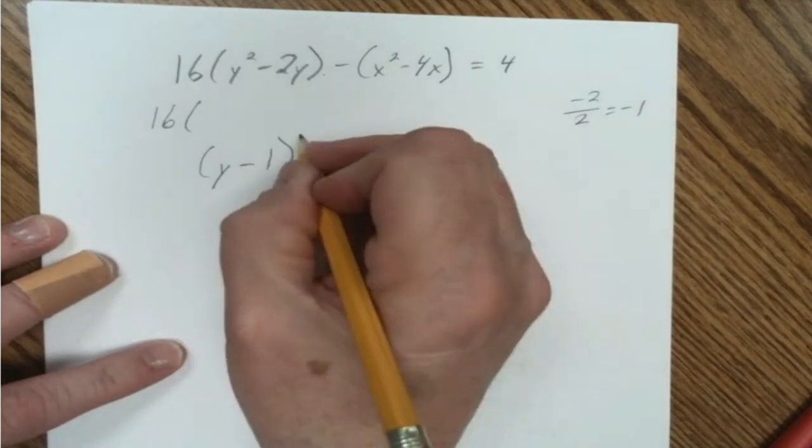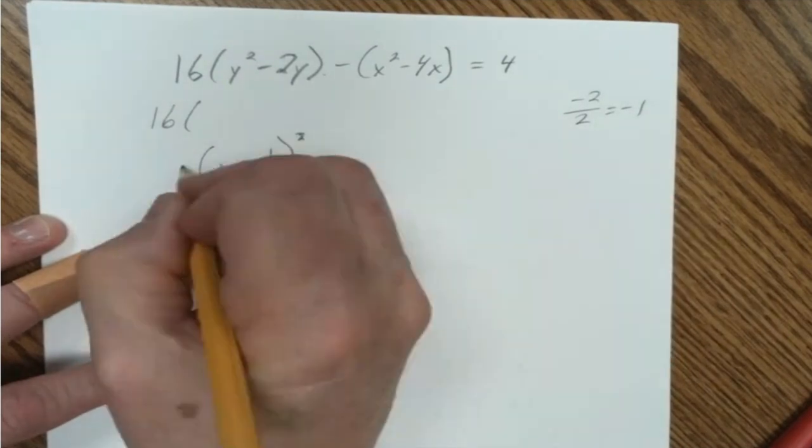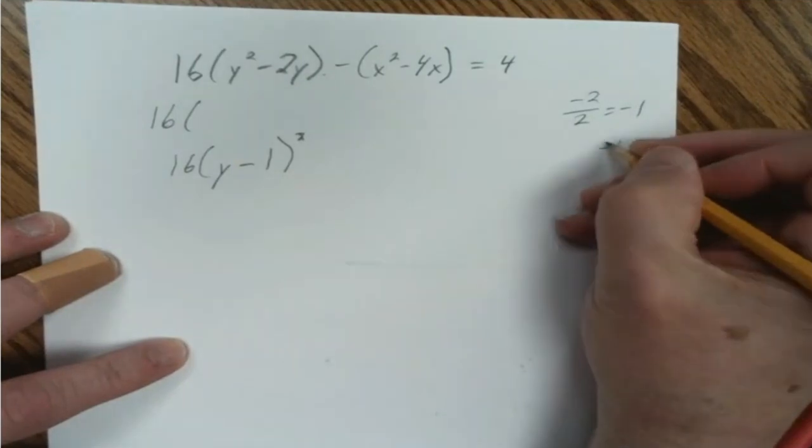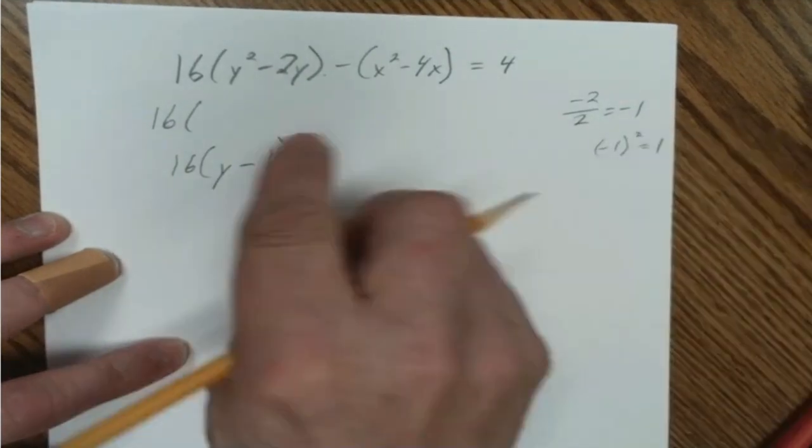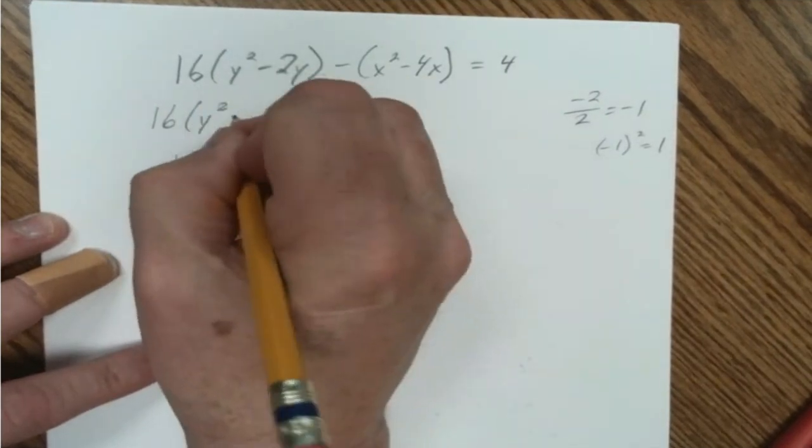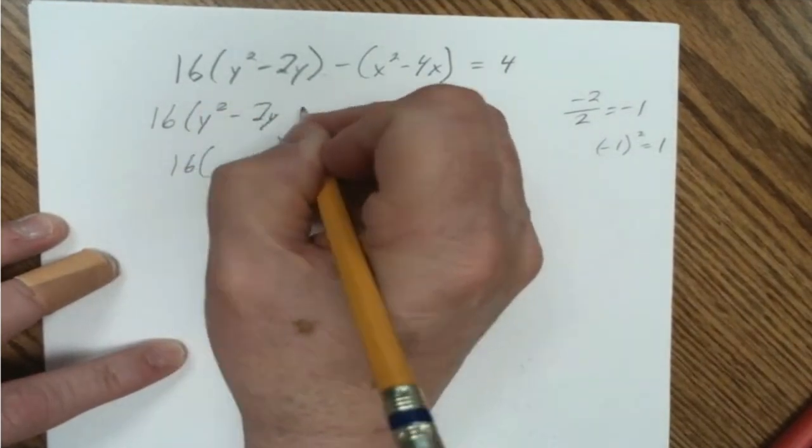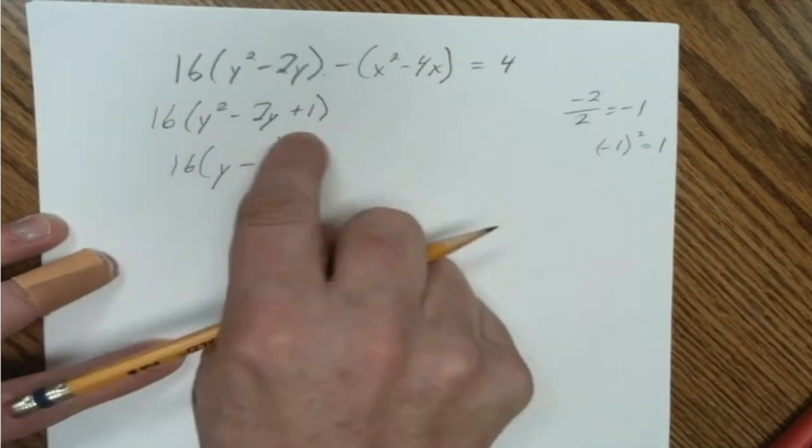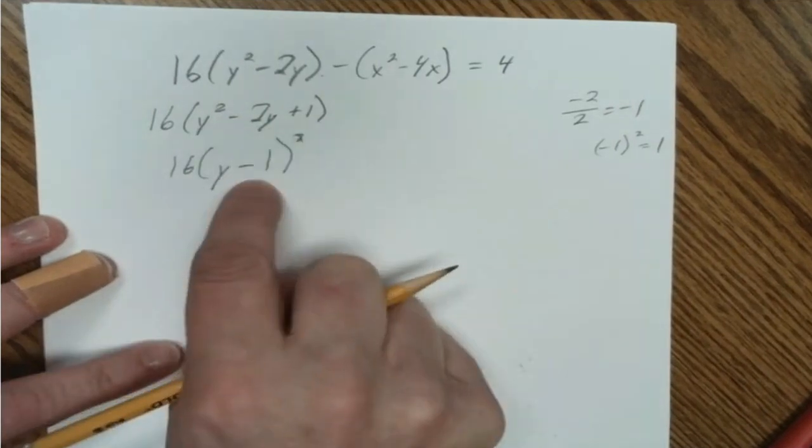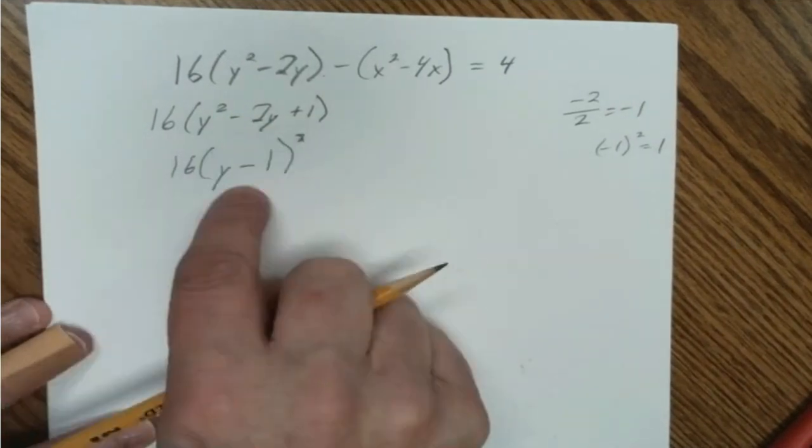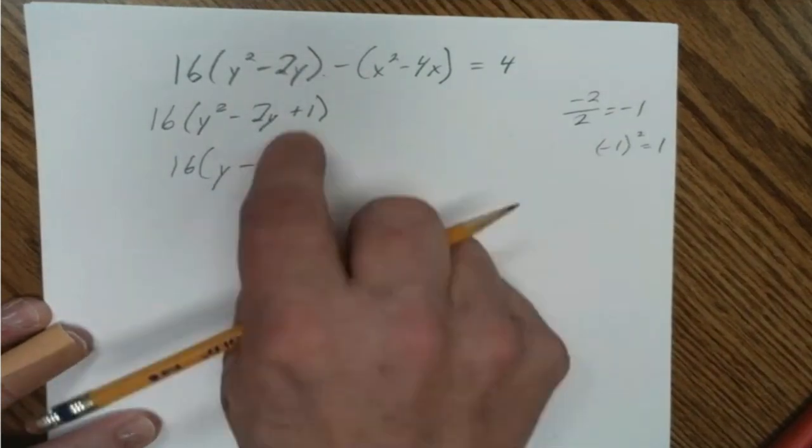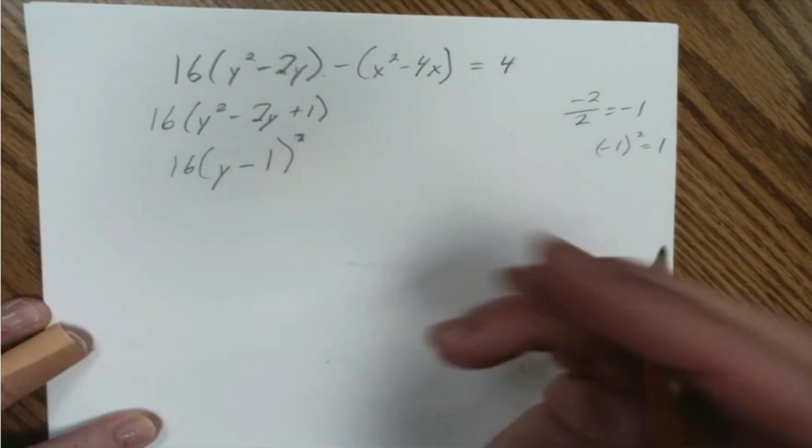Y minus 1 squared. For the next term, put the 16 out front, but when we take that negative 1 and square it, positive 1, that is the number that would complete this trinomial and make that a perfect square trinomial by adding the 1. So now that would factor to this binomial squared, which is why it's a perfect square. We wanted to create a binomial squared.